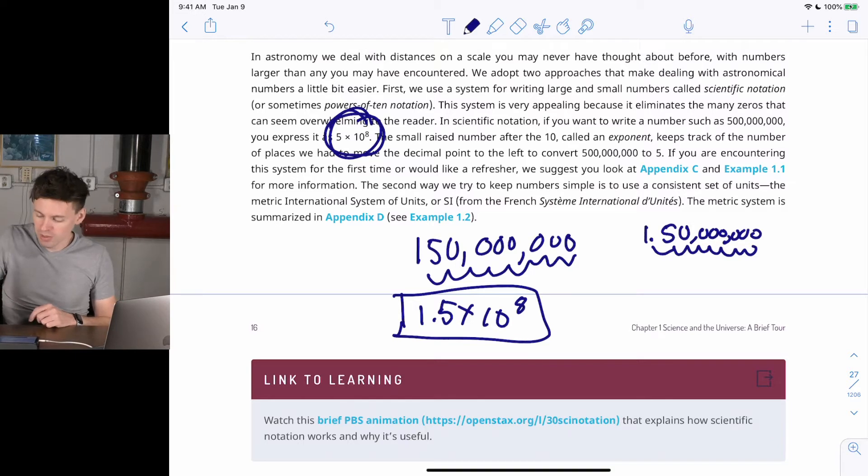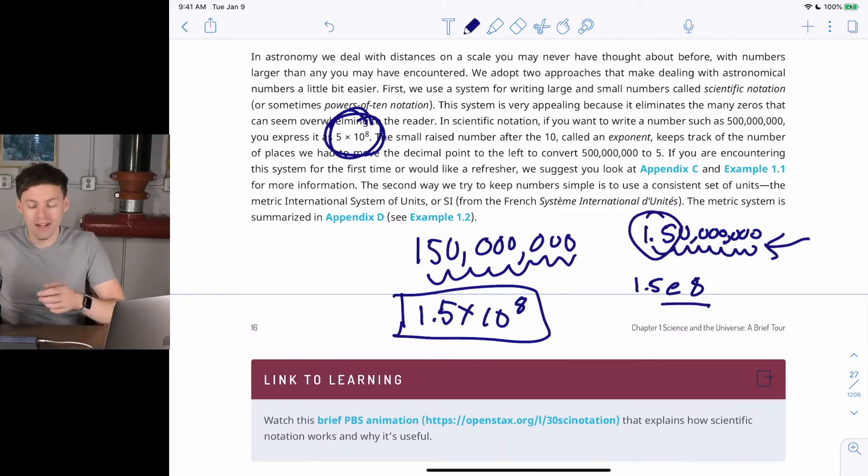It's just a shorter way. Sometimes you'll see it 1.5, e, 8, just a different way to write it. But that's just so you don't have to keep writing zeros all over the place because you don't really care about how many zeros there are. You care about this number and then the order of magnitude. So we would say 1.5 times 10 to the 8, and that's the same as 150 million.